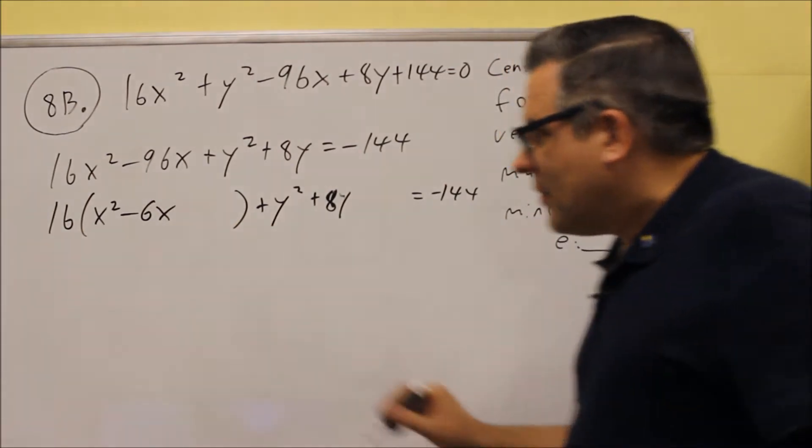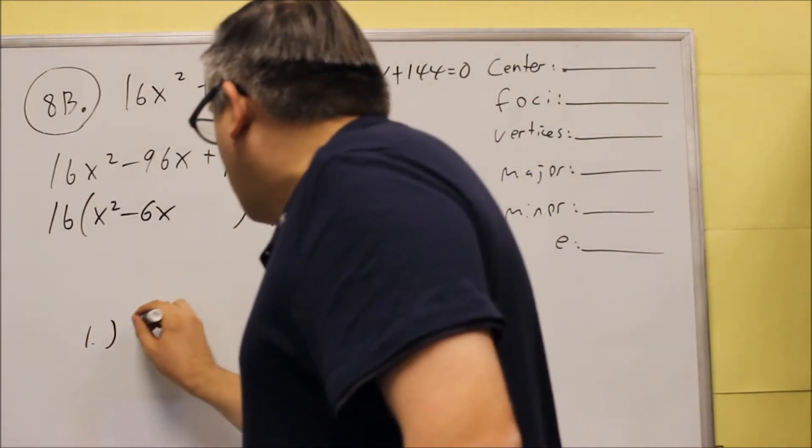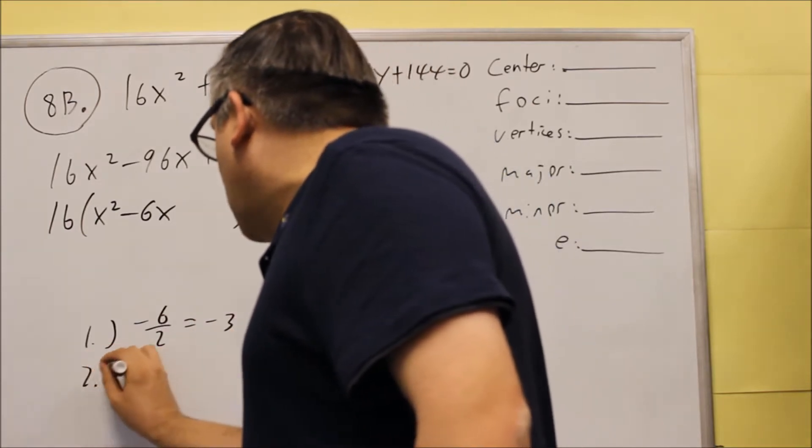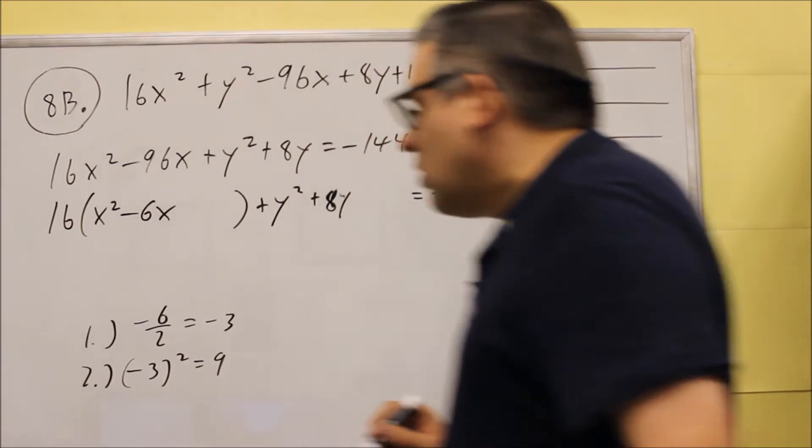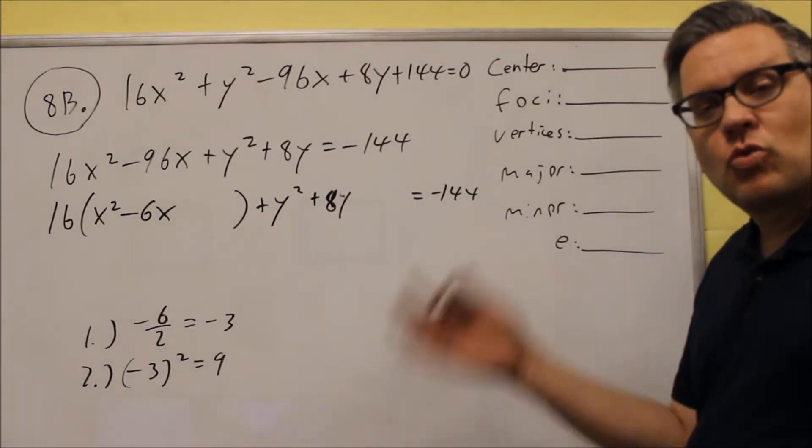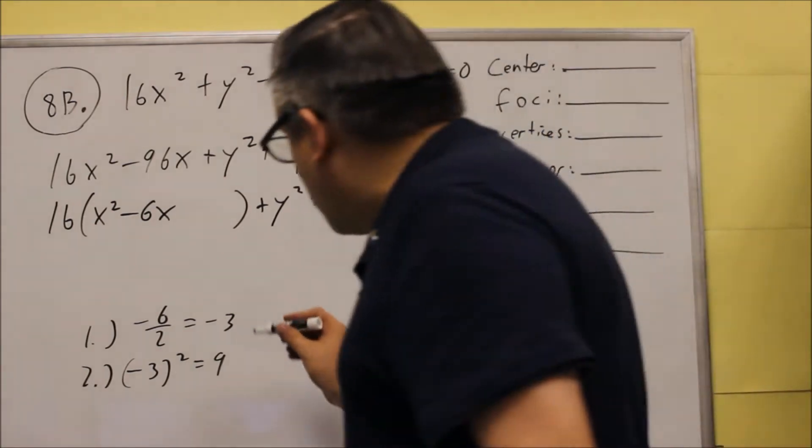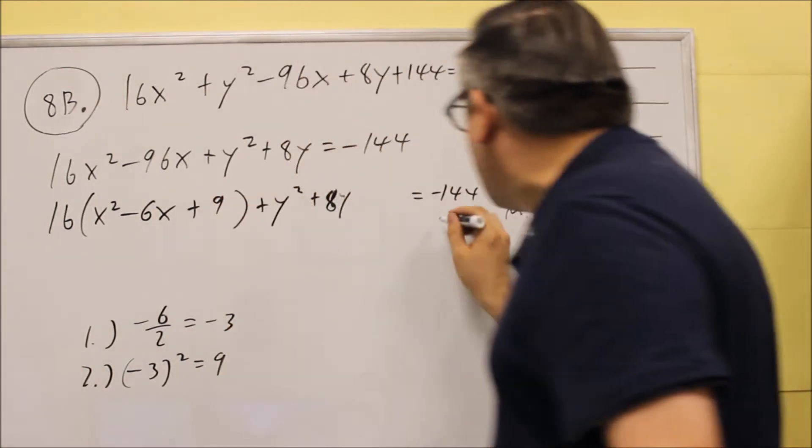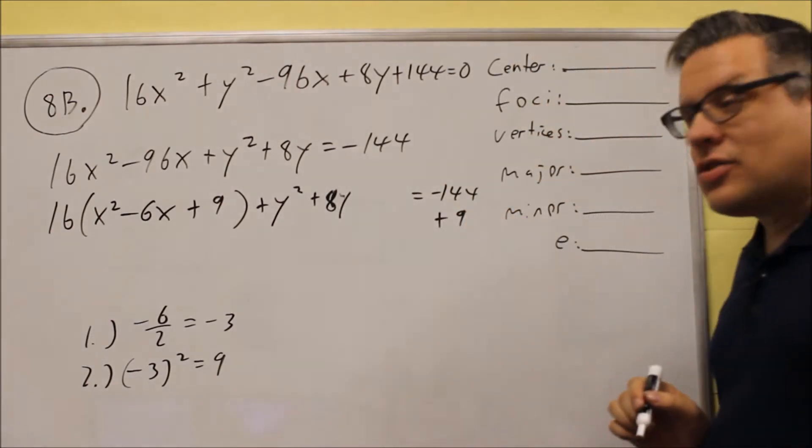Now for the first one, for complete the square, I'm going to take negative 6 divided by 2 and I get negative 3. And then I'm going to take negative 3 and square it, and I get positive 9. So you're always going to divide by 2 and you're always going to square on that one. So the number you get in step number 2, you want to add it to both sides of the equation.